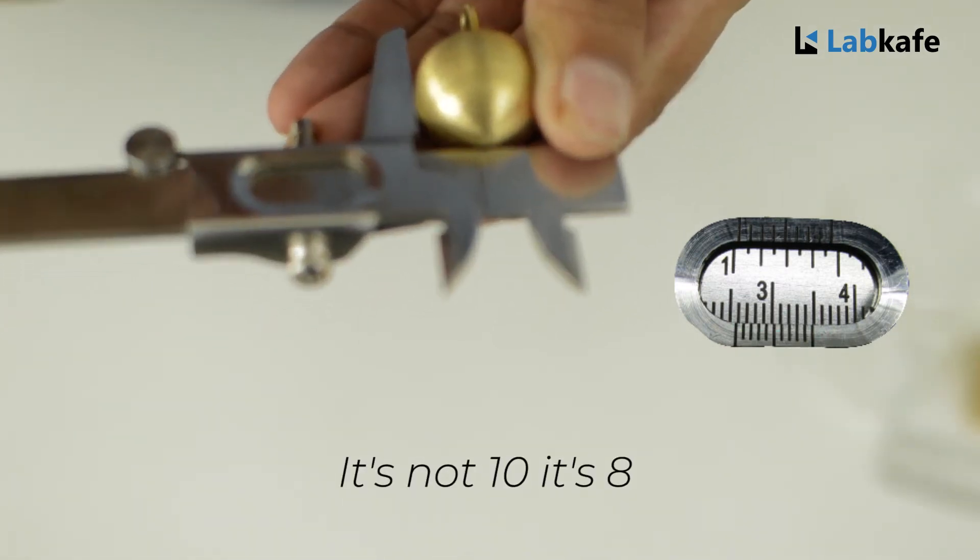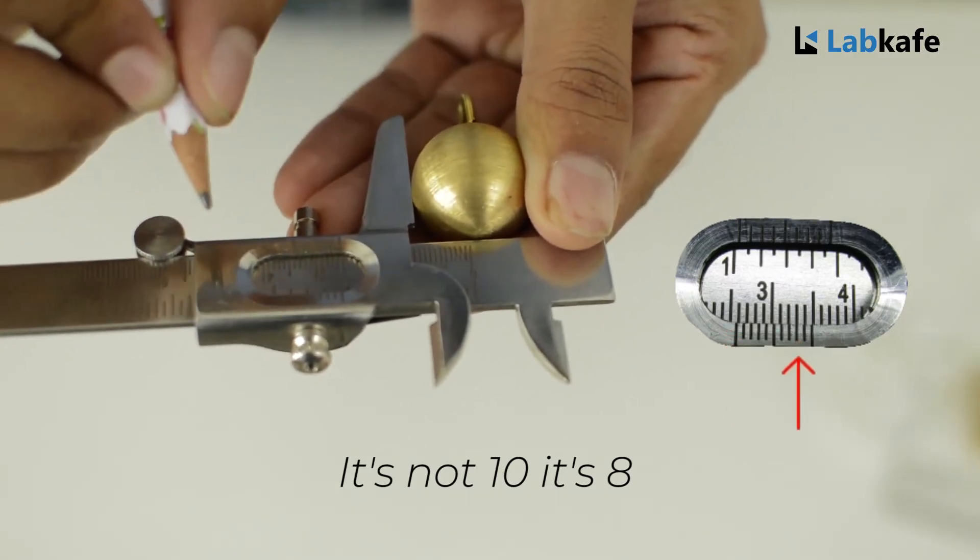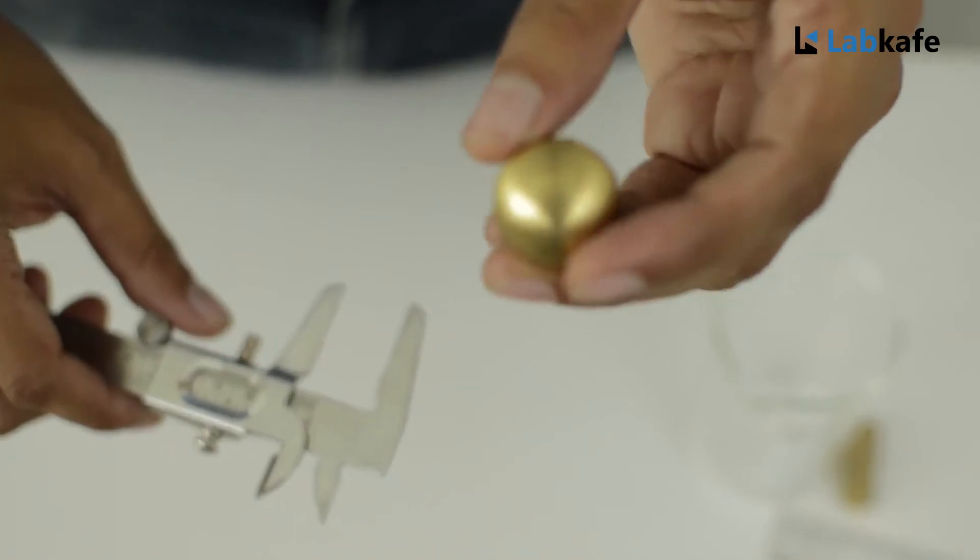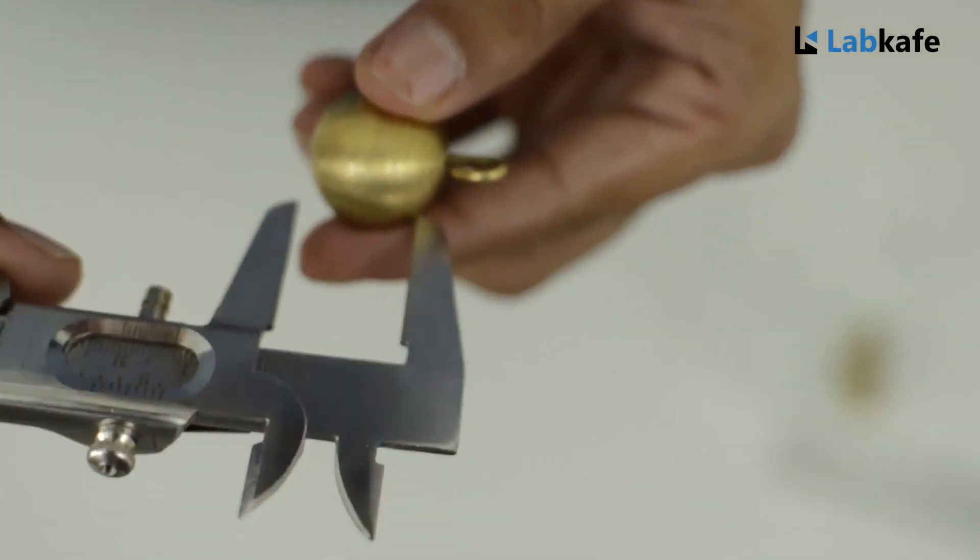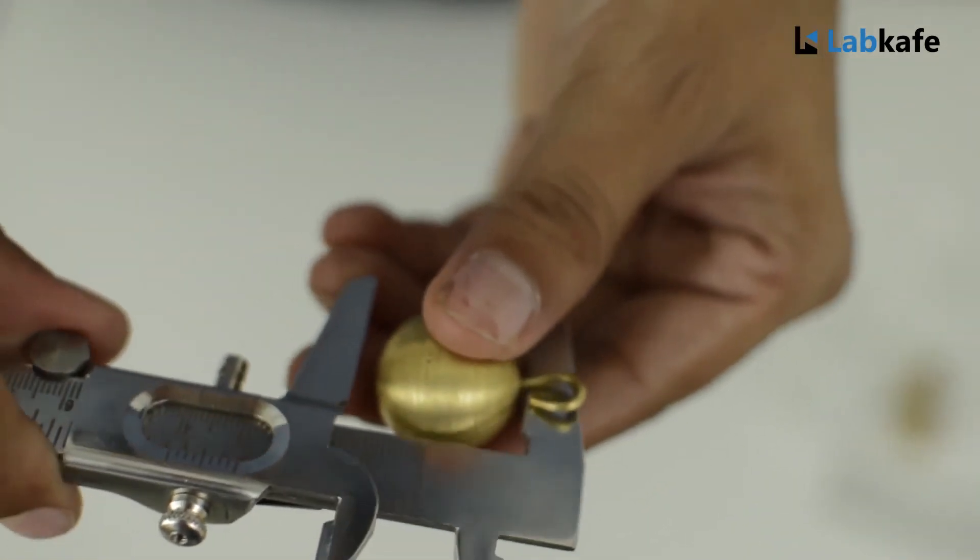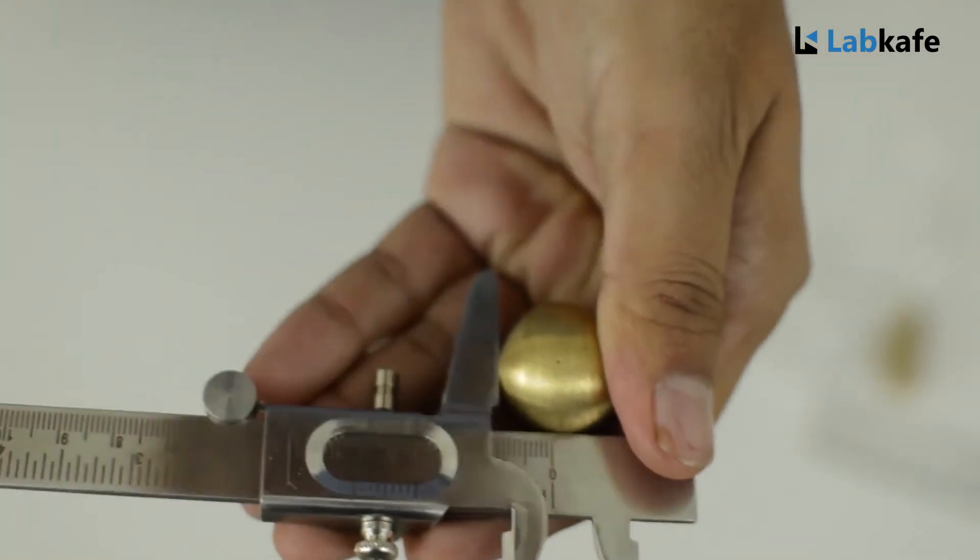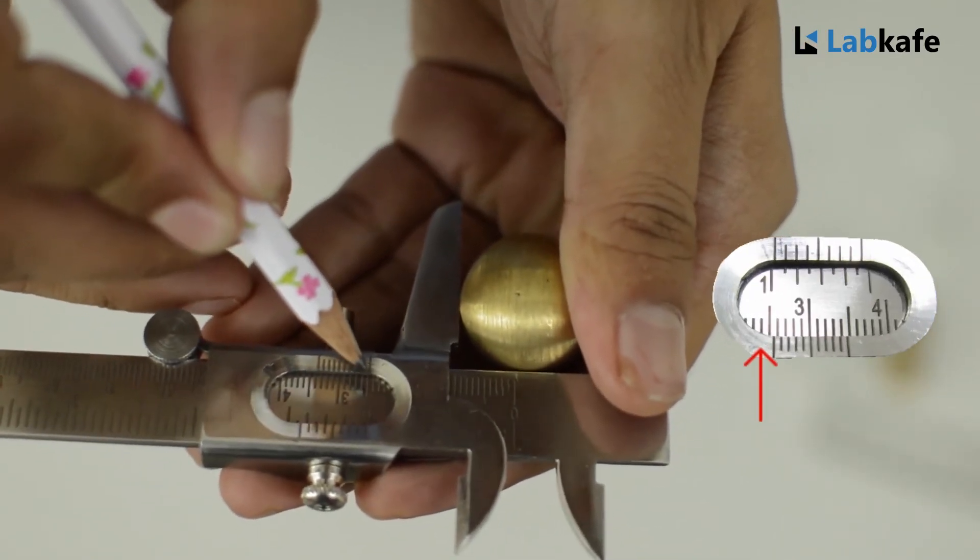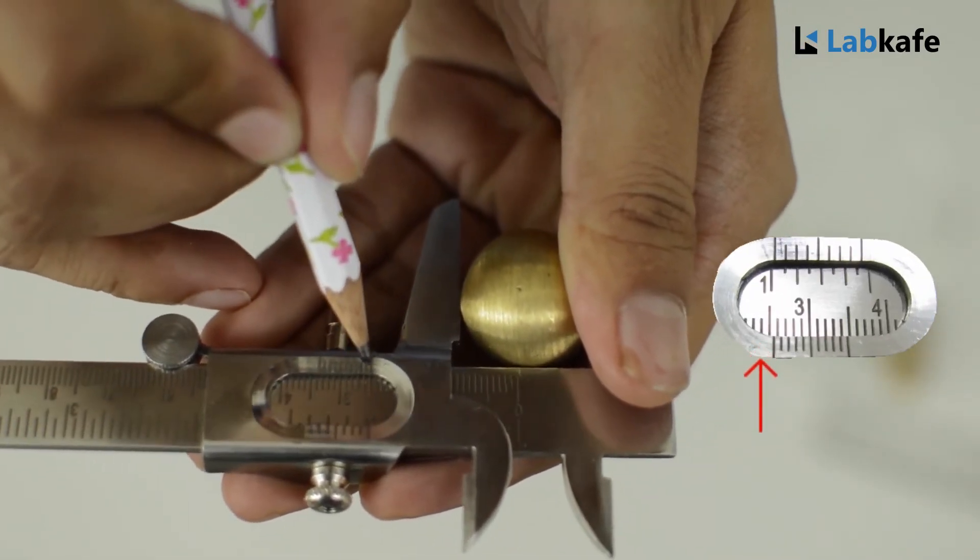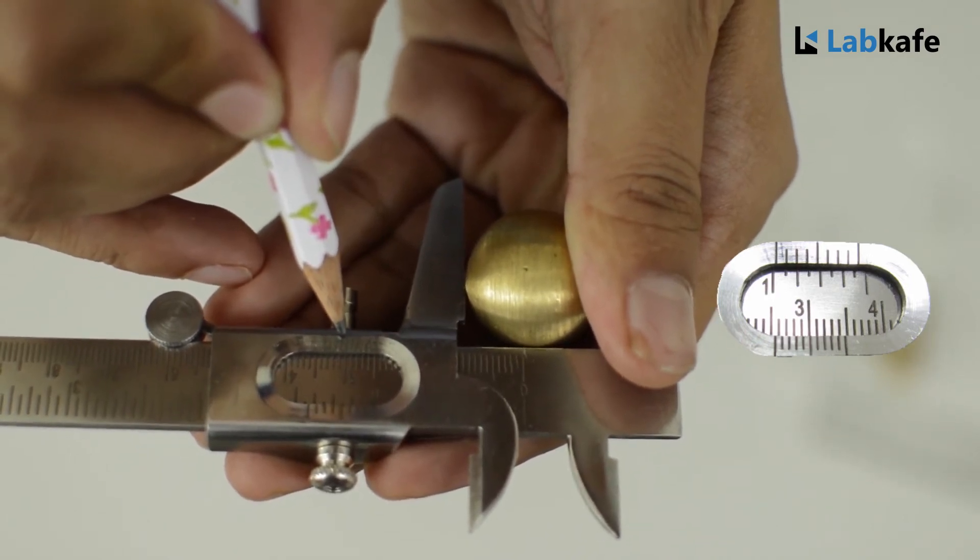In the same way, we will rotate this spherical body 90 degrees to its previous position and do the same, and we will take another set of readings. We can see that the main scale reading is 2.4 and the vernier scale reading is 6.